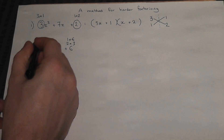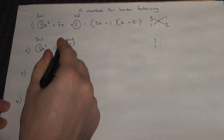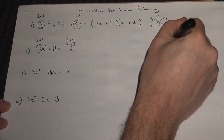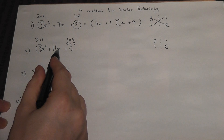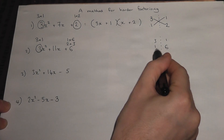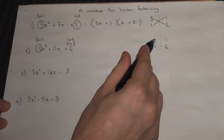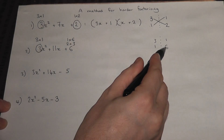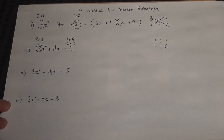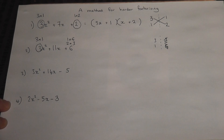I put the 3 and the 1 down a column and try the 1 and 6 first. Can I somehow make 11x? Well, 3 times 1 is 3, 1 times 6 is 6, and 3 plus 6 is 9, not 11. Then 3 times 6 is 18, 1 times 1 is 1, and 18 plus 1 is 19. So that doesn't work, so I can ignore that.